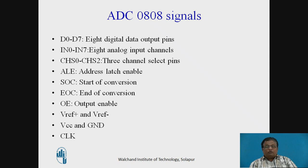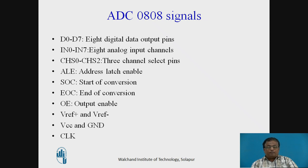After receiving the Start of Conversion signal, the ADC will begin converting the analog input to digital. When it completes the conversion, the ADC generates an output called End of Conversion (EOC), which is a low pulse type signal. To check whether conversion is completed, you need to monitor the EOC signal — when EOC goes low, it indicates that conversion is complete.